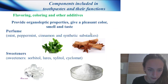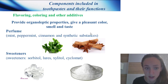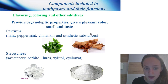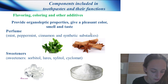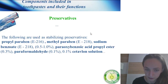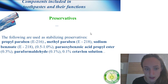Humectants give plasticity and retain moisture. Toothpaste content of glycerin at 70–80% creates transparent toothpaste. Flavoring, coloring, and other additives include perfume and sweeteners such as mint and peppermint. Sweeteners include sorbitol and xylitol. Preservatives used include propylparaben, methylparaben, and sodium benzoate.